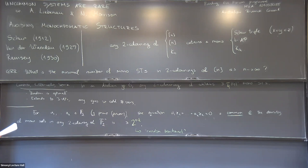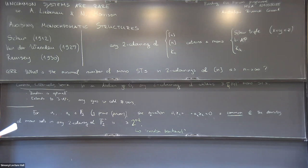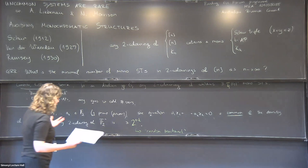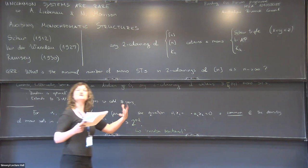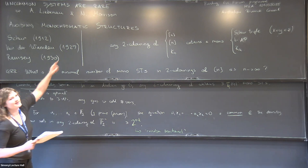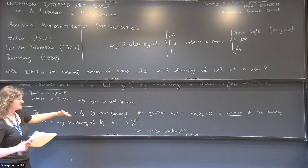In short, a system is 'common' if any coloring has at least the random benchmark density of monochromatic solutions — and it's why the title is maybe an oxymoron, because the solutions are actually common.